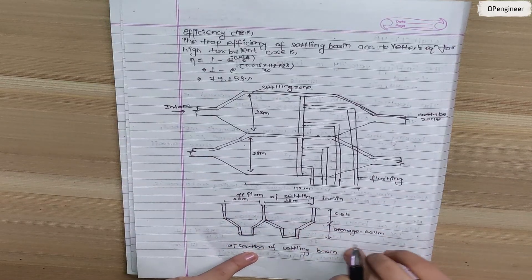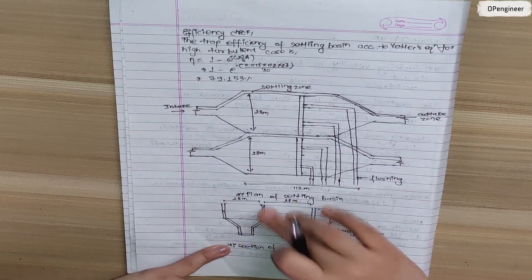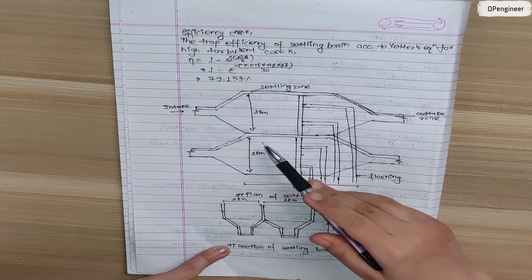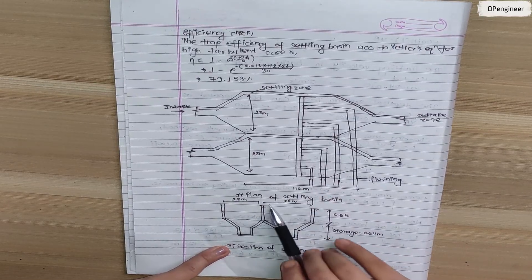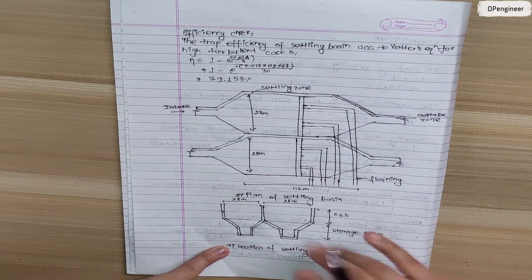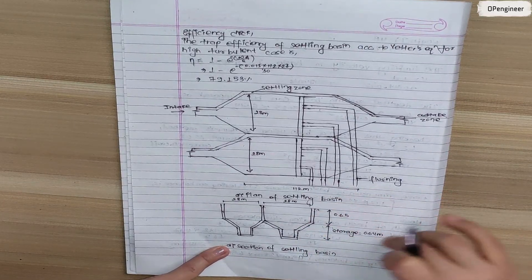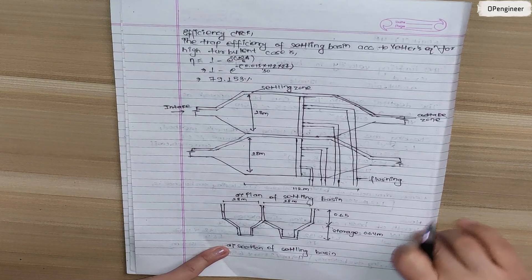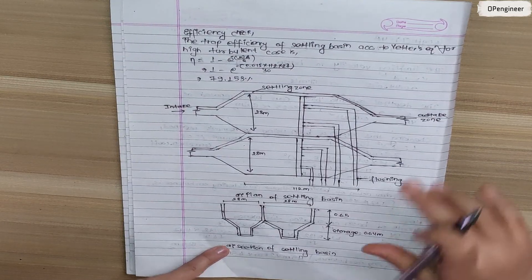The width of the settling basin is 28 meters and the sluice opening is 0.64 meters as shown in the section drawing.